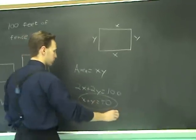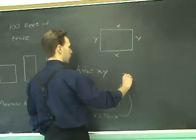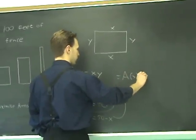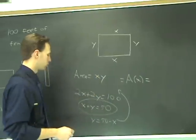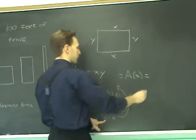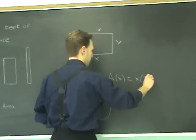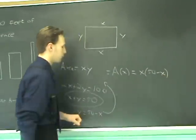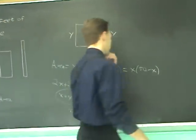And that makes the area function, we plug that back in there, you have A of x by itself, equals what was once x times y, will be x times 50 minus x. And it comes down to maximizing this function. What is its maximum value?